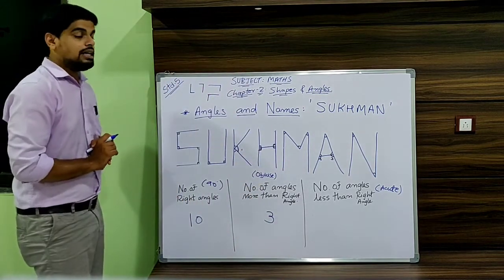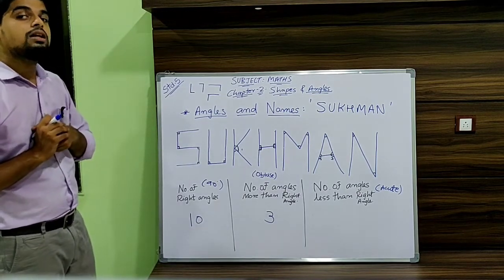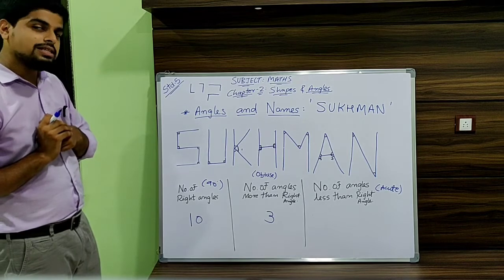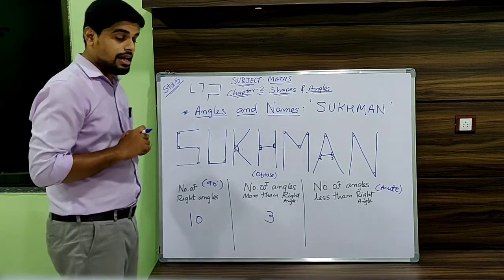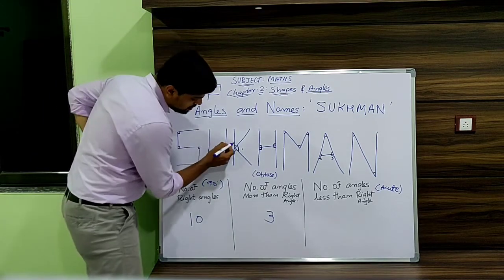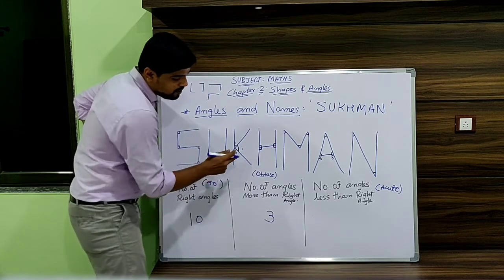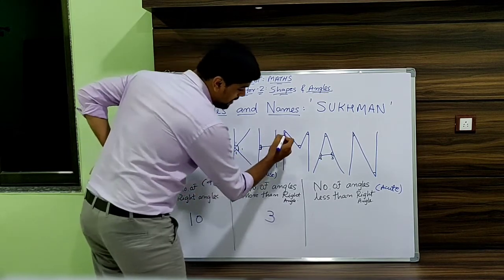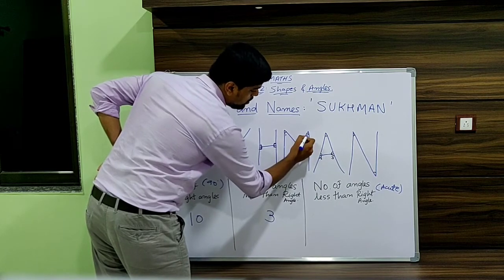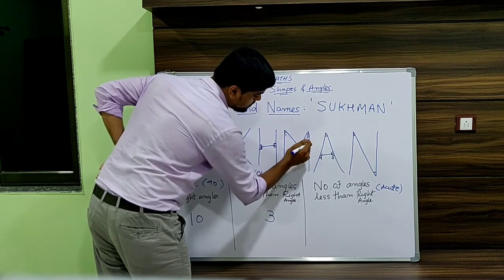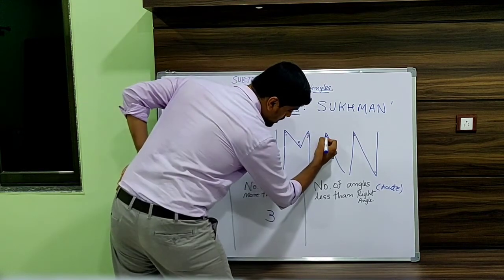Now finally the acute angles — the angles which are less than 90 degrees. Let's see how many angles are less than 90 in the given name. In K: this is 1, this is 2. Does H have any? No. M has 1, 2, 3 acute angles.